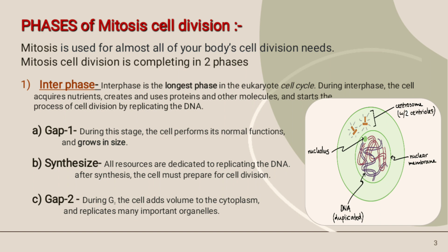Interphase is the longest phase in the eukaryotic cell cycle. During interphase, the cell acquires nutrients, creates and uses proteins and other molecules, and starts the process of cell division by replicating the DNA.